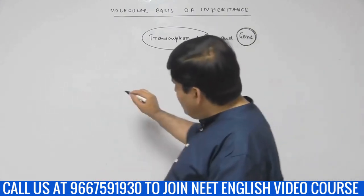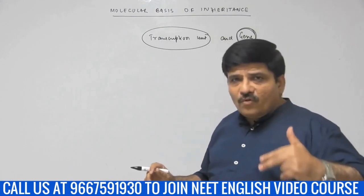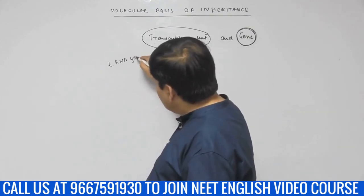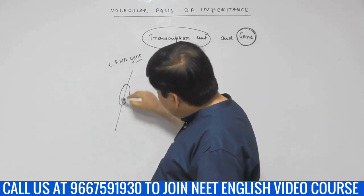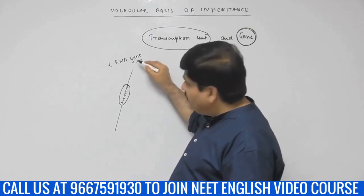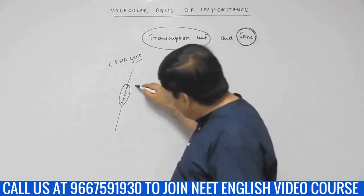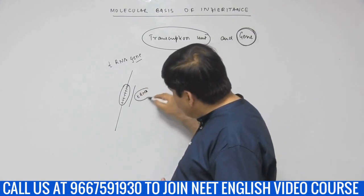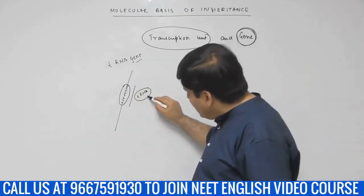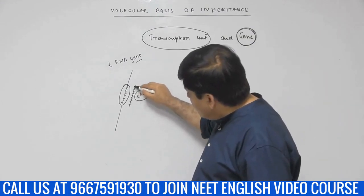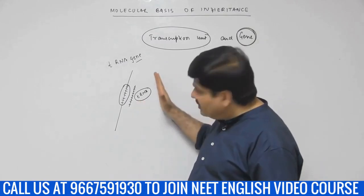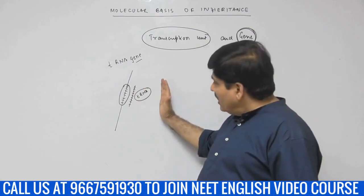First, let us think of a gene that carries the code for the transcript called transfer RNA — we call it a tRNA gene. There will be a segment of DNA that carries the sequence of deoxyribonucleotides coding for the ribonucleotides present on the transfer RNA molecule. The transcript is called tRNA. Please understand that some genes' transcript will be transfer RNA, and this transfer RNA is not going to be translated — the story ends there. Transfer RNA genes are transcribed into transfer RNA molecules with no further translation into proteins.